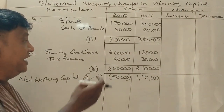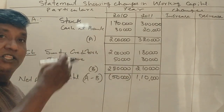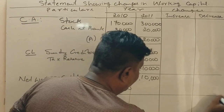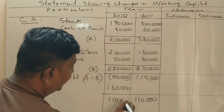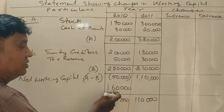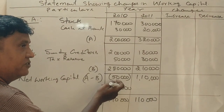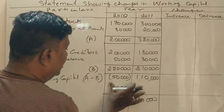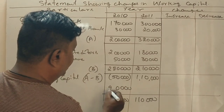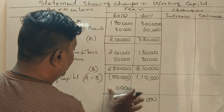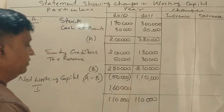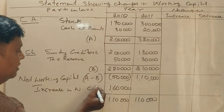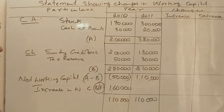The figures are: 1,60,000 and 1,10,000. So 2010 working capital is negative, and 2011 net working capital is positive. The corrected figure is 2,10,000. The increase in working capital is 1,60,000, which is the balancing figure.